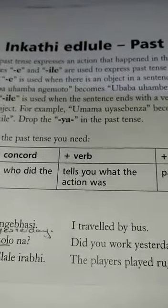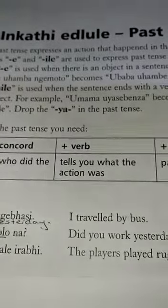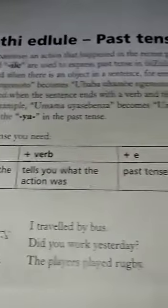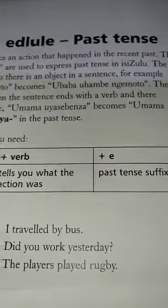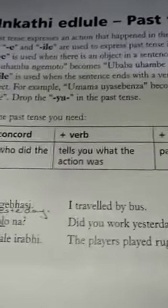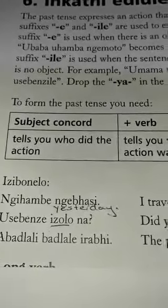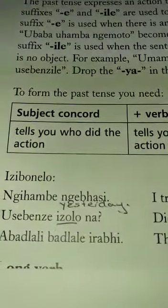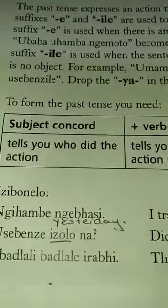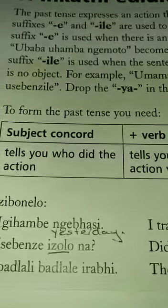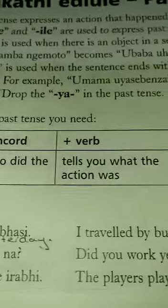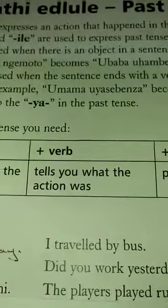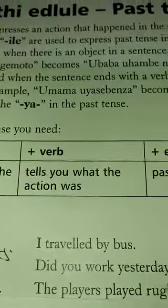Page 56 of your textbook, Inkati e Vlule, past tense. Remember that to make any sentence you need a subject concord, which tells you who did the action, and a verb, which tells you what the action is or was.